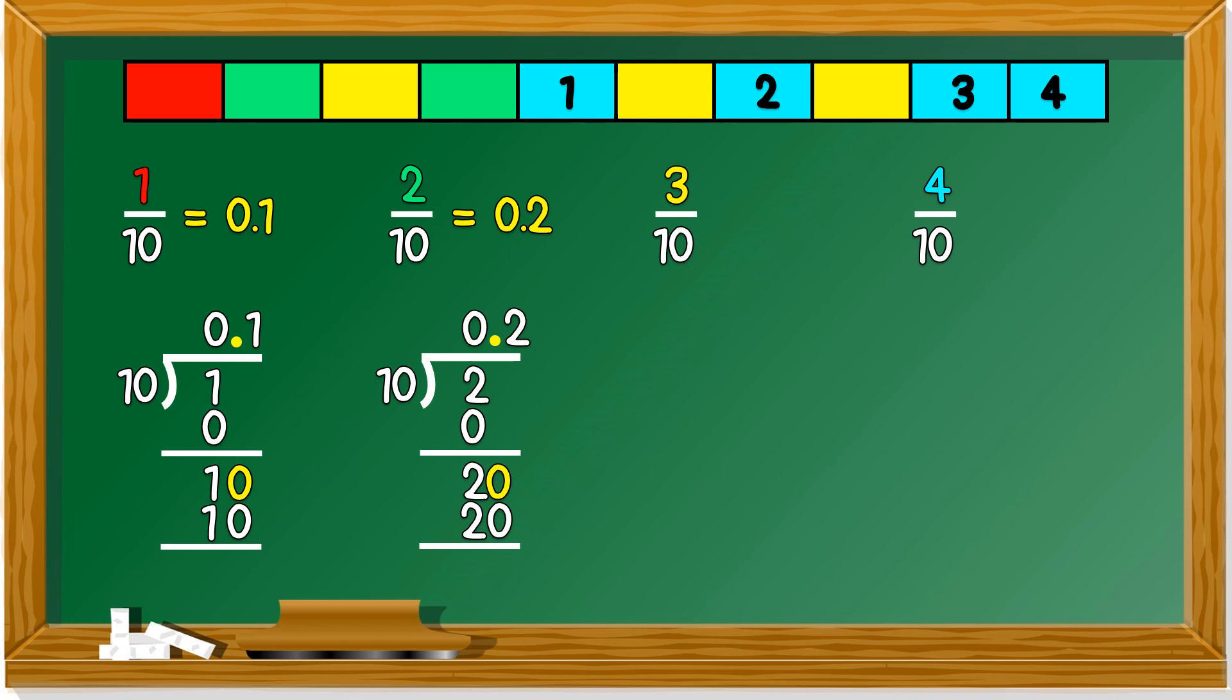Same goes for 3 over 10. 3 over 10 is 3 divided by 10. Again, 0 times 3 equals 0, so we get remainder of 3. When we put the decimal point up there, we get a 0 down there. 30 divided by 10 is 3, so we don't get any more remainder. 3 over 10 equals to 0.3.